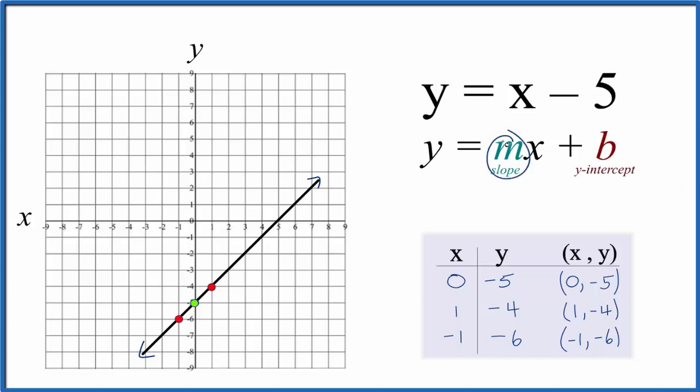When we look at slope m, there's nothing in front of the x. So we assume that to be 1. It's not written, but it's there. And we could think about this as a fraction. 1 is the same as 1 over 1. But now we can say we have rise over run. So we can go up 1 and over 1.